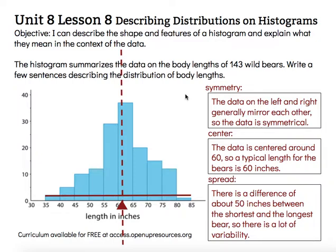Our objective said: I can describe the shape and features of a histogram and explain what they mean in the context of data. The symmetry tells us if the data looks pretty much the same to the left and to the right of that center point, and the spread tells us how alike the data is — the more spread out it is, the less alike the data is; in this case, the less alike the heights of these bears are. Thanks for watching.